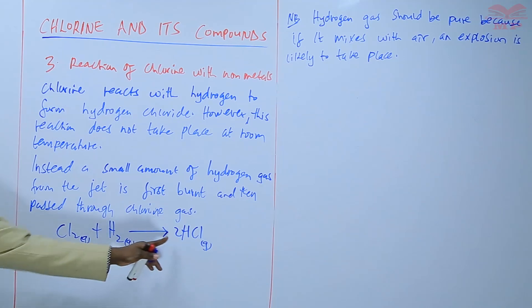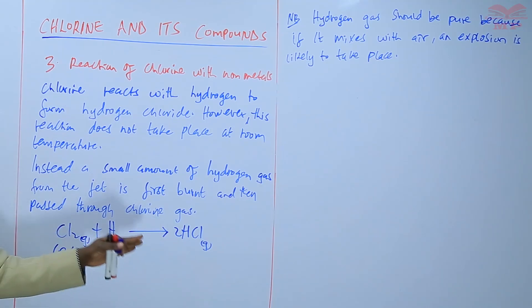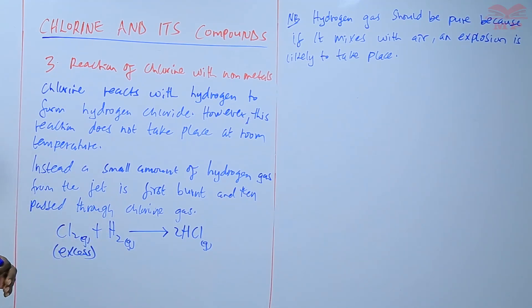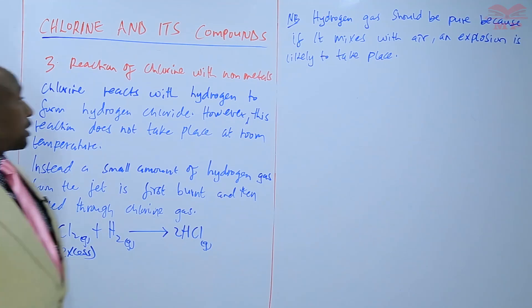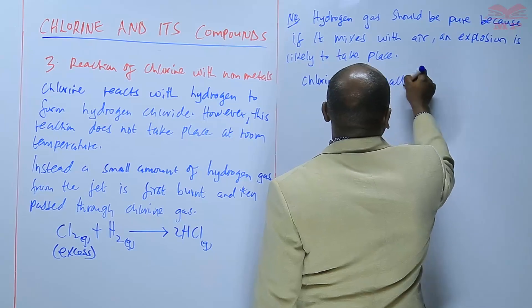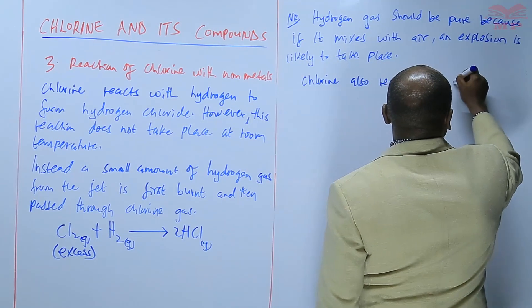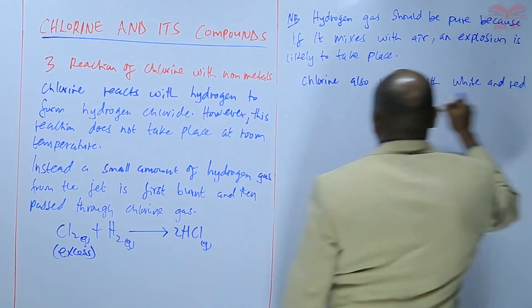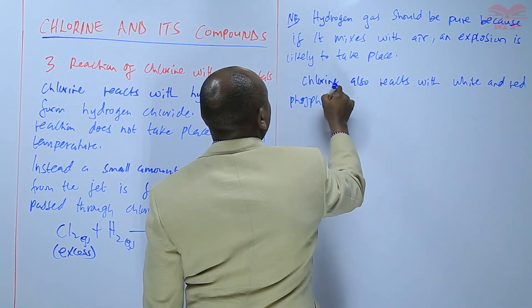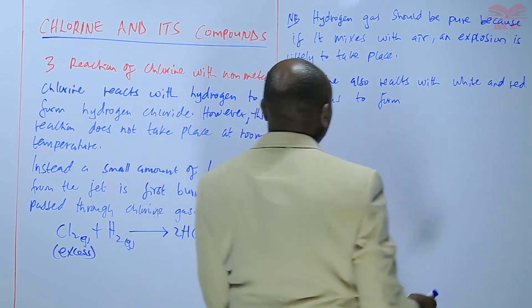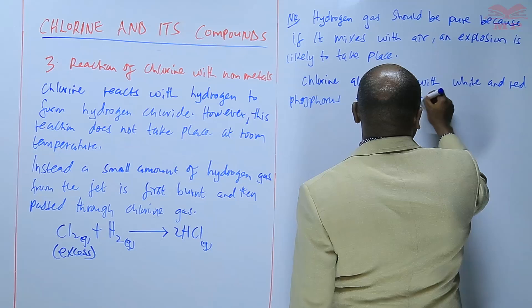When that reaction takes place, we form hydrogen chloride gas, which is a colorless gas. So basically that is one of the non-metals that reacts with chlorine. Chlorine also reacts with phosphorus — both white and red phosphorus — to form phosphorus chlorides.